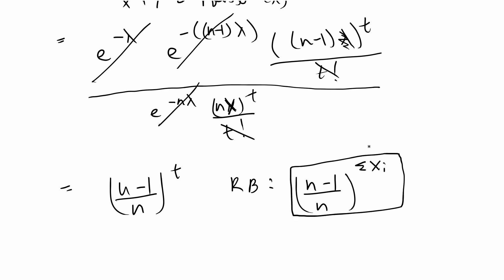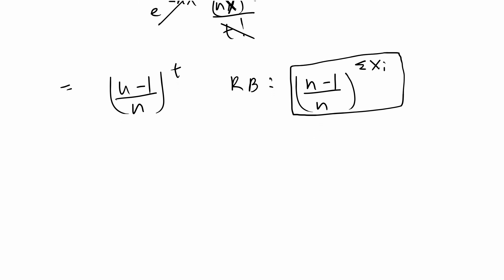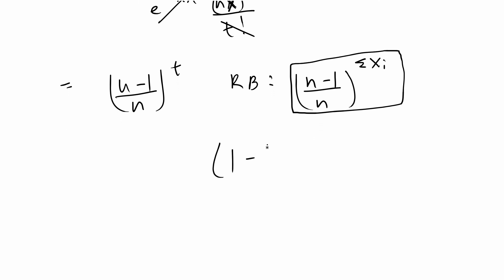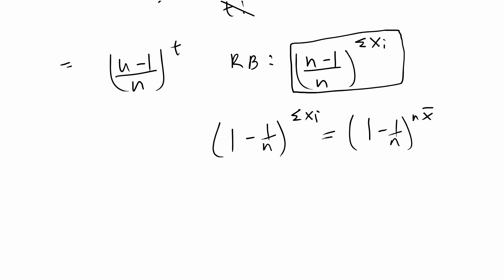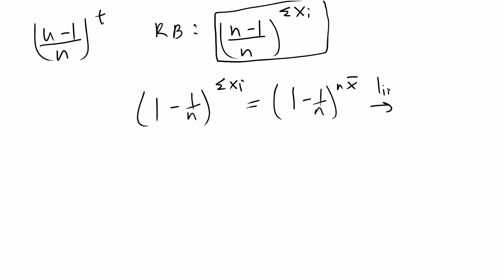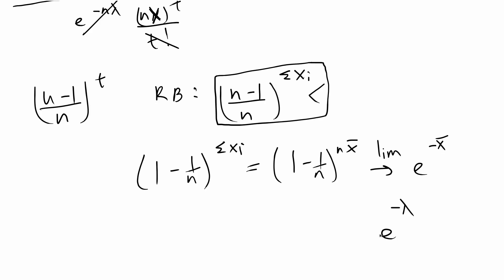Our final answer is (n-1)/n to the sum of xi. At first it might look a little weird, but this simplifies to (1 - 1/n) to the sum of xi, which can be further written as (1 - 1/n)^(n * x̄). This limit converges to e to the negative sample mean. Since we were asked to find an estimator for e to the negative lambda, it makes sense that the limit converges to e to the negative sample mean.